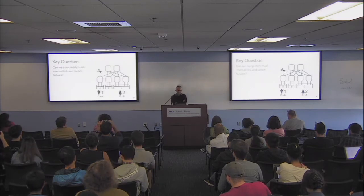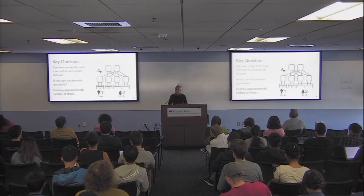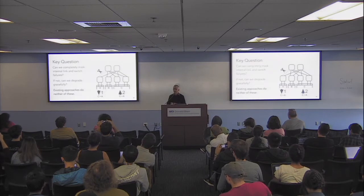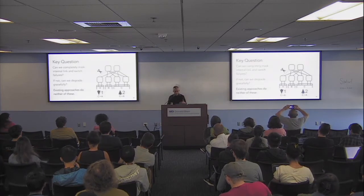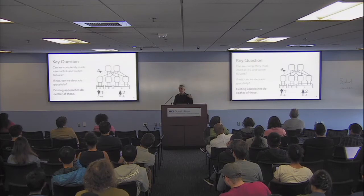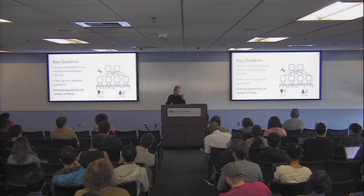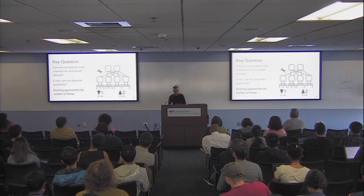In this work we asked: can we completely mask all these failures? Or if we can't mask them, can we degrade gracefully? If my capacity degrades — in this case one link goes out of eight links — you're losing half your capacity because one-eighth of those links went down. That's not graceful degradation. You want to lose capacity proportional to the degree of failure that you have.